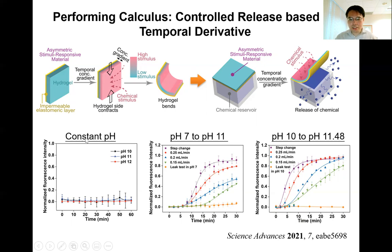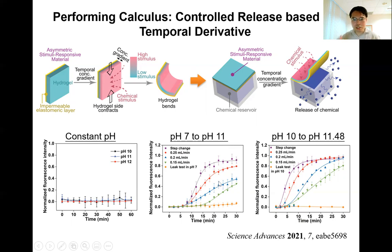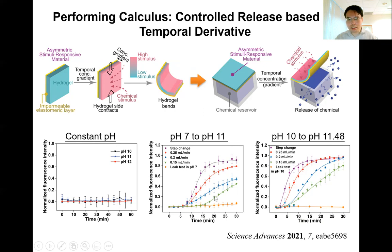We show experimentally that whenever the pH is constant — regardless of whether it is pH 10 or pH 12 — there is no release of the chemical from the reservoir with respect to time. But whenever there is a change in pH, for example from pH 7 to pH 11, there is release of the chemical from the reservoir. Different lines indicate different rates of change of pH from 7 to 11, and we found that the faster the rate of change of pH, the faster the release of the chemical. We demonstrated experiments using different ranges of pH and found a very similar set of results. In conclusion, controlled release can be performed based on analyzing the temporal derivative and not the absolute magnitude of the pH.